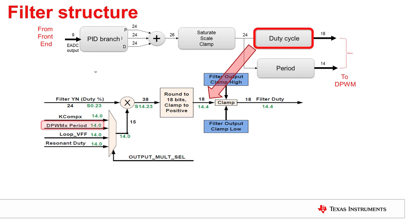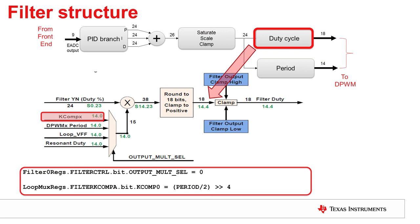Here is the duty cycle output stage of the filter. Previously, we selected the DPWM period as the output multiplier so that the filter output modulates the duty cycle of the DPWM period. In the code changes that we just made, we changed the output multiplier to KComp0. This is a 14-bit value which we set equal to the period divided by 2 to avoid shoot-through. Note that we have to right-shift the value by 4 to adjust for the different alignments between KComp0 and the DPWM period register. This code change is a better option for handling shoot-through versus using a clamp on the filter output, as it uses the full dynamic range of the filter.